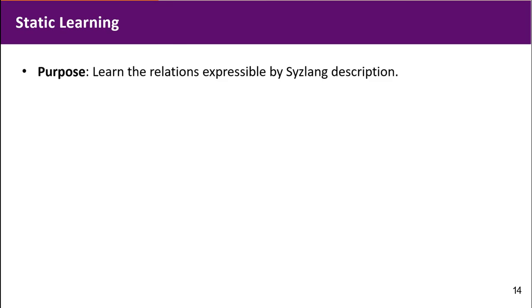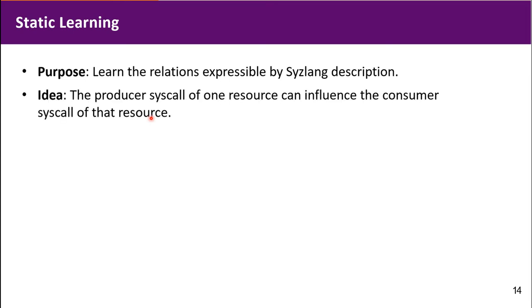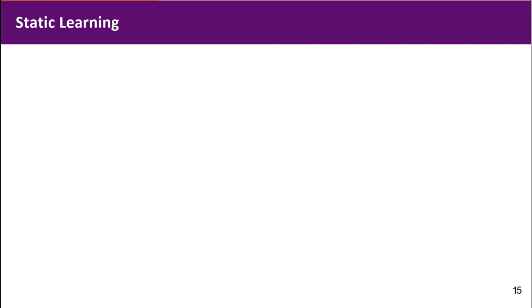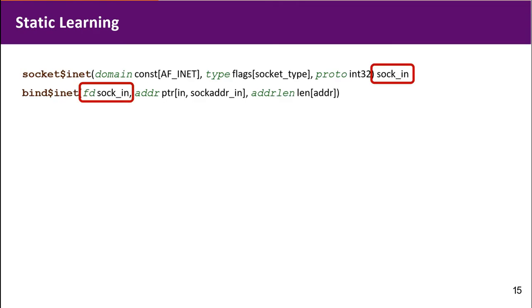The first part of relational learning is static learning. We want to learn some obvious relations expressable by Syslang. The idea here is that the producer call of one resource can influence the consumer call of that resource. We can use an example to demonstrate this.